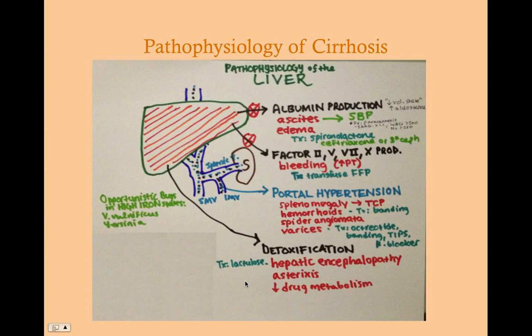What's the pathophysiology of cirrhosis? First, you'll reduce your production of albumin. Since albumin is responsible for maintaining oncotic pressure, when oncotic pressure drops, fluid moves out into the interstitial space, causing edema and ascites. Ascites is fluid in the peritoneum; edema is fluid in general tissue. One important thing to worry about with ascites is the possibility of developing spontaneous bacterial peritonitis, which we'll talk about in detail shortly.